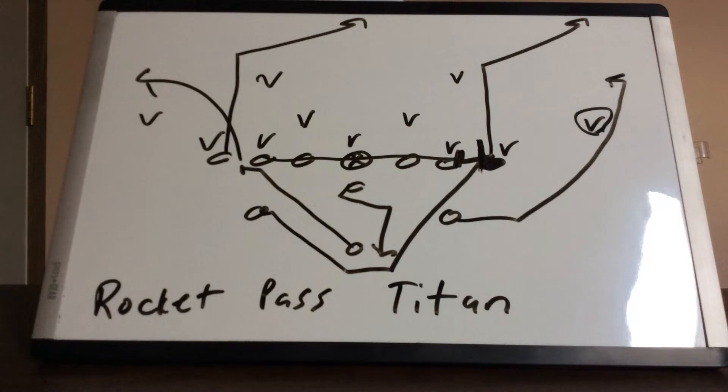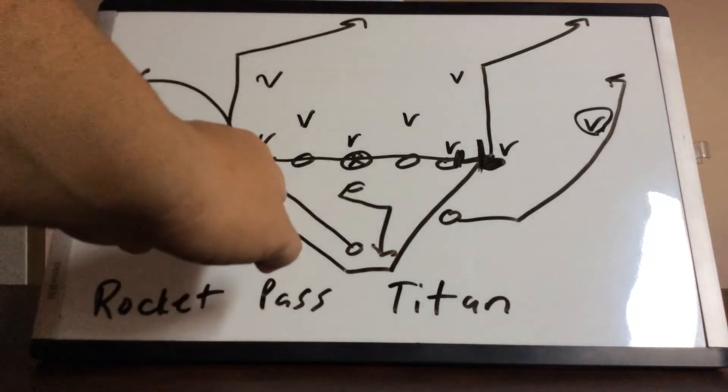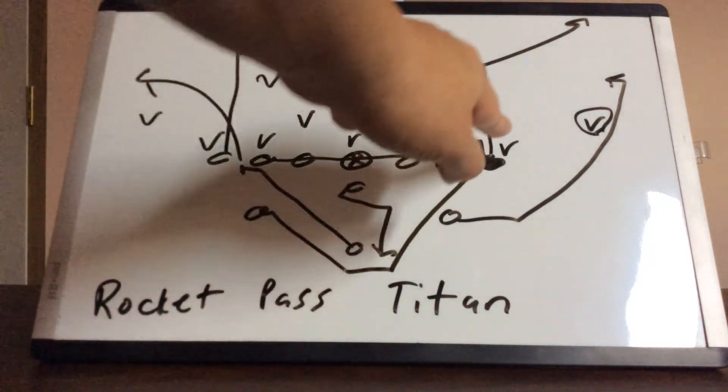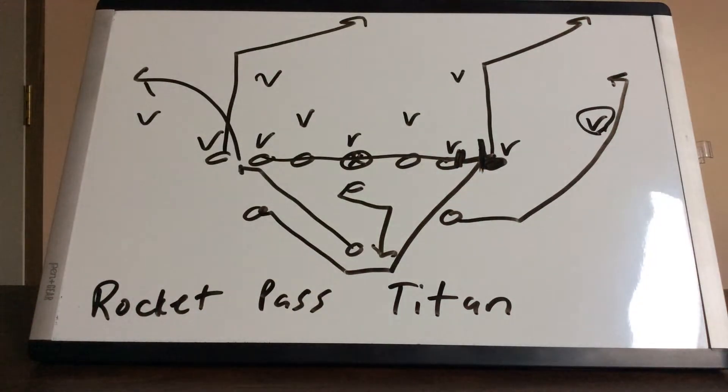The cadence is down ready, set, hut. On the arm ready, he's going to hammer step. He's going to take two diagonal steps, then run flat for three steps, turn up and block the first threat that comes off the tackle.